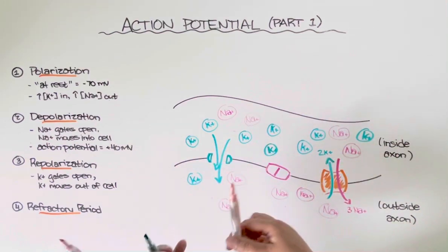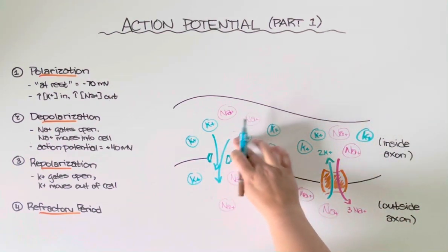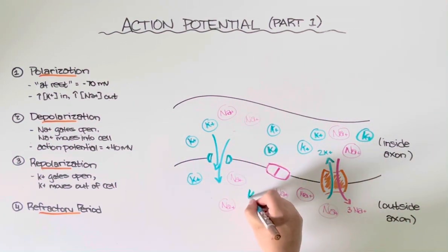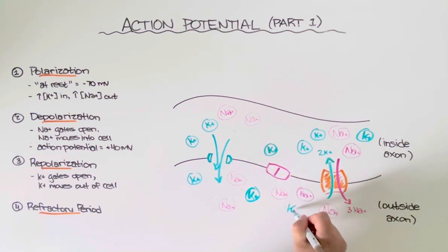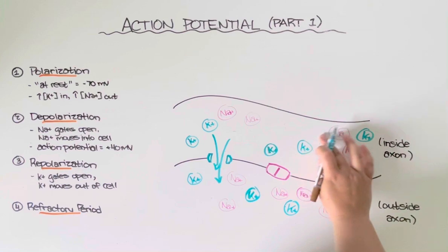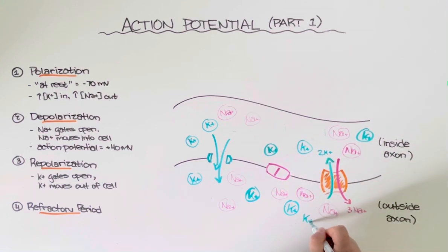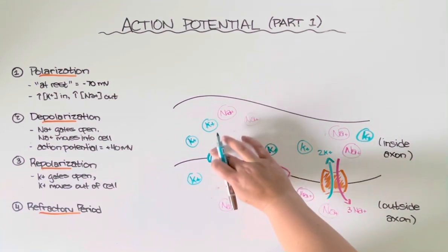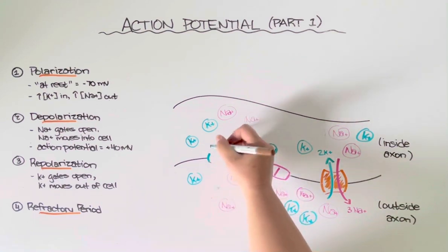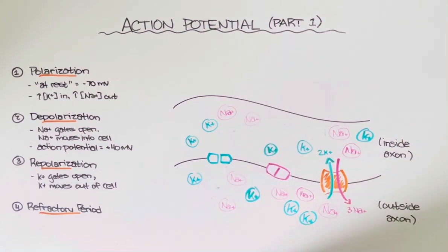And again, this won't happen forever. Eventually, potassium will reach equilibrium inside and outside the cell. At which point we can say that the repolarization process has ended, and then of course those gates will close. Not perfectly closed, a little bit leaky, but you get the idea.